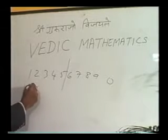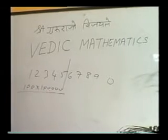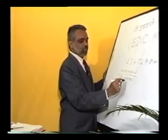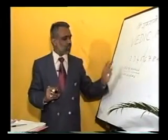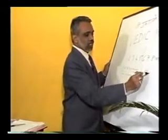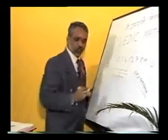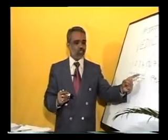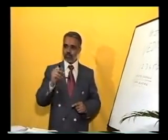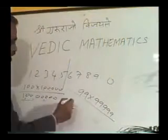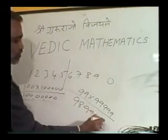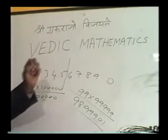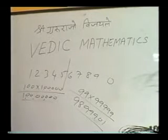For example, if I ask you to multiply 100 by 1 lakh, you can tell me the product easily. But if I ask you to multiply 99 by 99,999, how fast can you do it? Because you are finding it difficult using the conventional method. If we use Vedic Mathematics, I can give you the answer in a fraction of a second — by adopting the sutra 'Ekanyunena Purvena'.